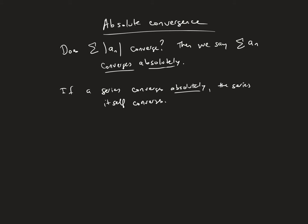So while that looks like the statement above, the statement above is sort of like saying if the absolute values converge, then we call that absolute convergence. The statement below says if that absolute convergence is happening, the regular series converges.